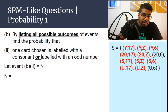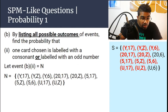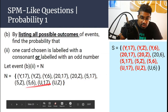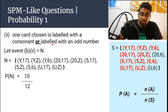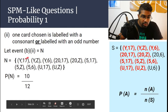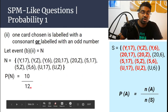So we list all possible outcomes using set notation: N = {Y17, YZ, Y6, 20,17, 20,Z, 5,17, 5Z, 5,6, U17, UZ}. The total number of events here is 10. So the probability of N is 10 over the total of 12. Simplifying, the answer is 5 over 6.